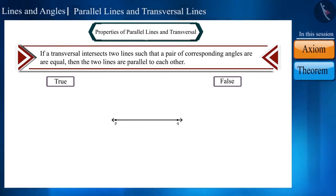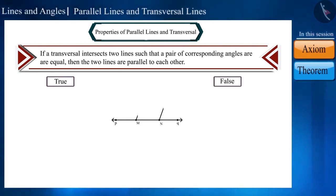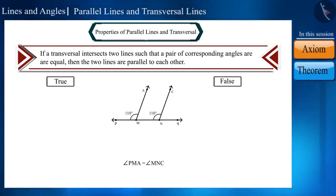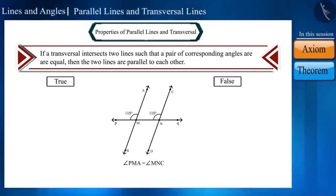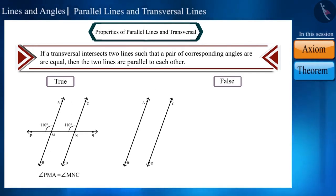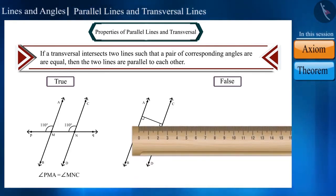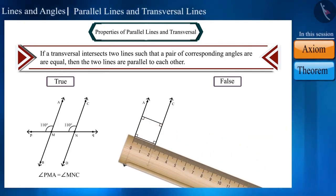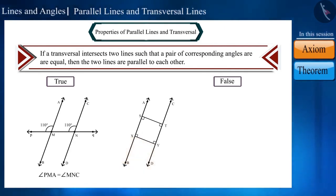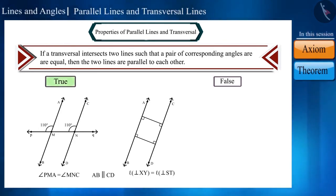Draw a line PQ and mark two points M and N on it. Construct angle PMA and angle MNC on these points such that they are equal to each other. Draw lines AB and CD by extending AM and CN respectively to the other side of PQ. These two lines are not intersecting each other. We can also measure the distance between line AB and line CD by making a common perpendicular on them — these lengths are equal at each place. That is why we can say that these lines are parallel. Therefore, the given statement is true, and we call this the converse of corresponding angles axiom.